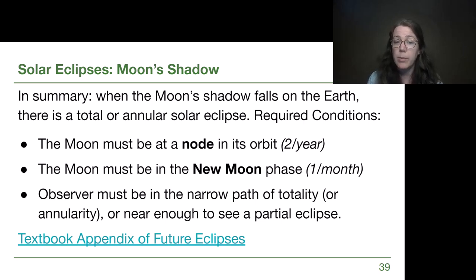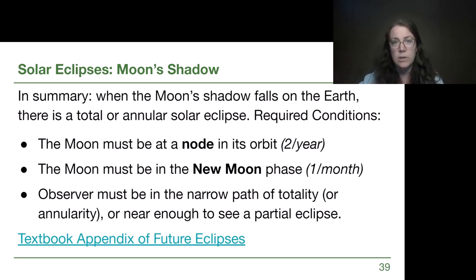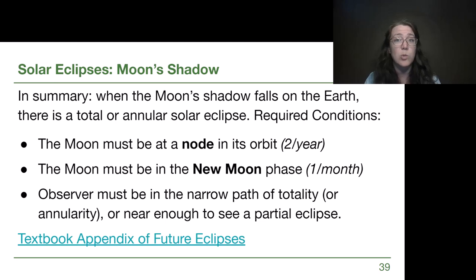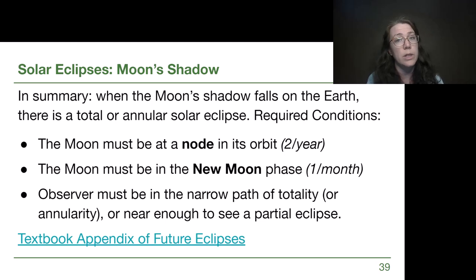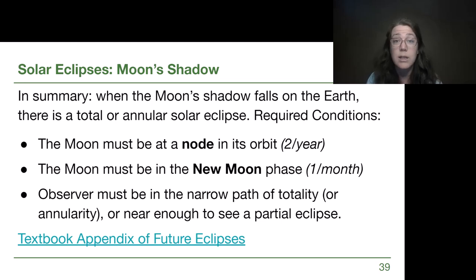Our textbook has an appendix of upcoming eclipses, so if you're curious you can see what's nearby. You may have heard that the next eclipse is 2044 or 2045 — I want to be very clear that that's the next one you could see without a passport. There are between zero and two solar eclipses every single year. For example, 2026 will have one crossing through Iceland and Spain. So keep your eyes peeled, look at the appendix, and if you're interested in planning ahead, definitely talk with me.